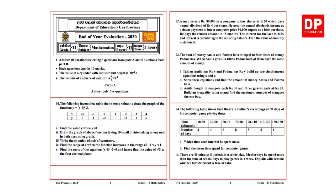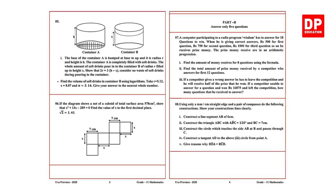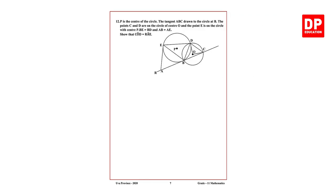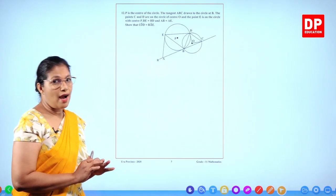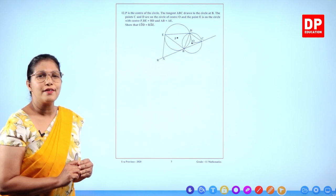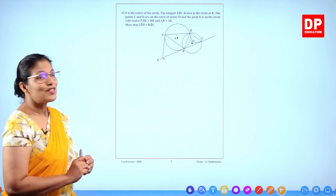The paper has questions 1 through 6 in part A, and questions 7 through 12 in part B. You can ask for line papers and for graph questions ask for graph paper. Let's do this paper now. Answer only 5 questions in part A.